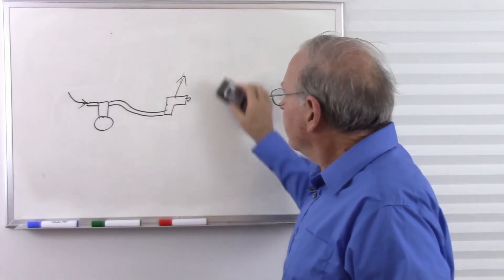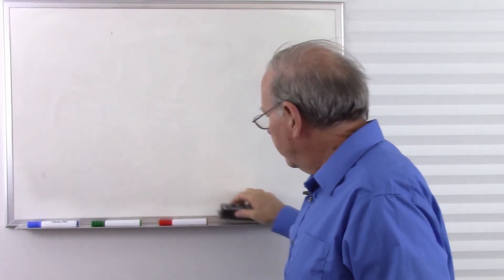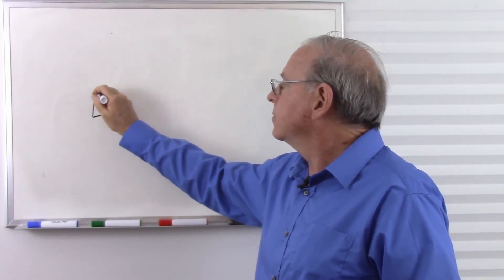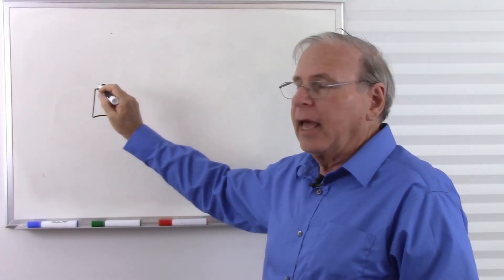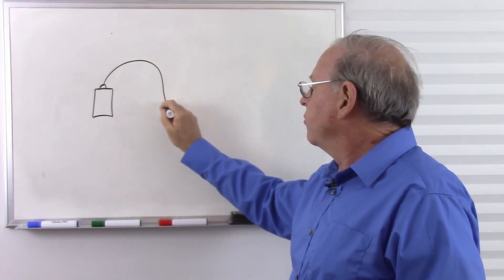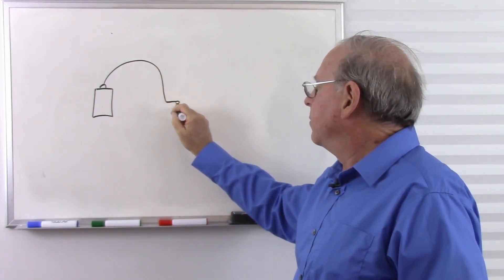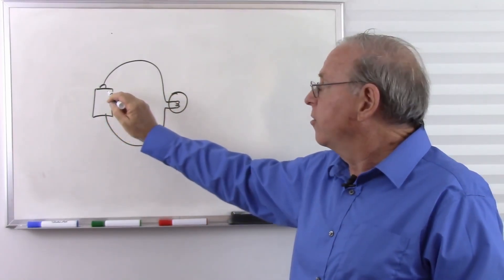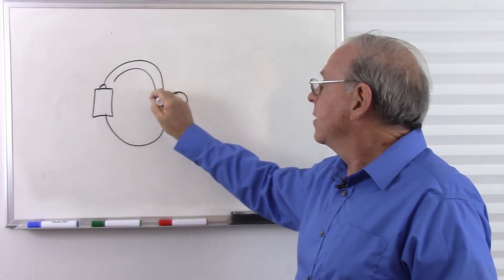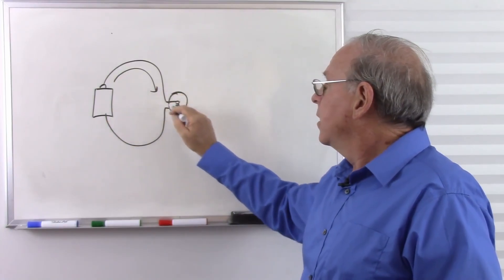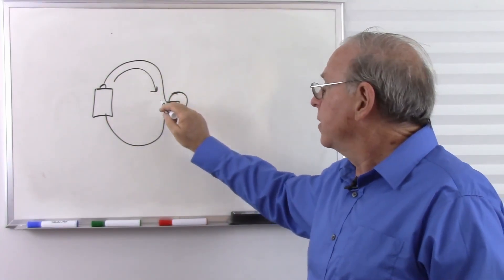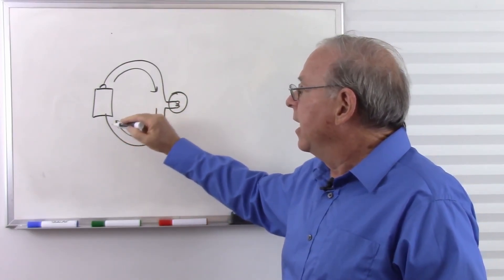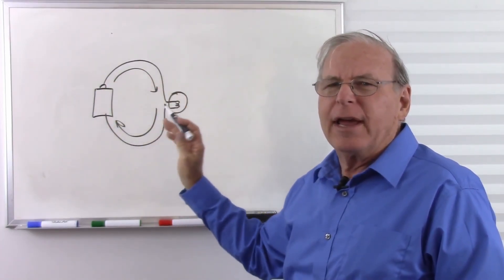But an electrical circuit is a closed system. So we have something like a battery and a wire that will take us to a light bulb. The electricity pumps out of the battery, does its work through the light bulb, or whatever other circuit we have, and then returns back to the battery and circulates around and around.